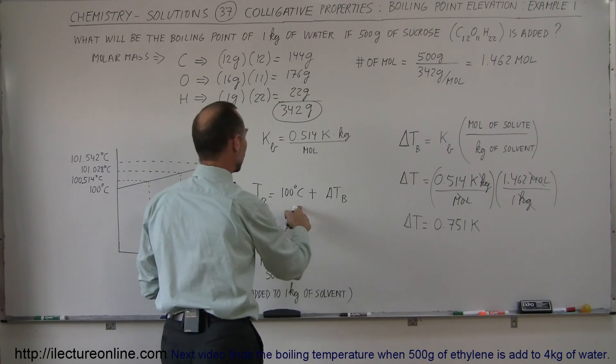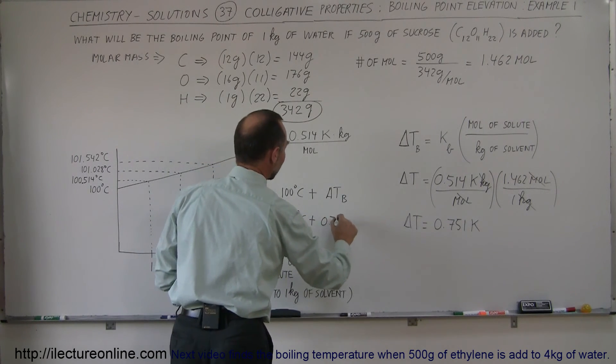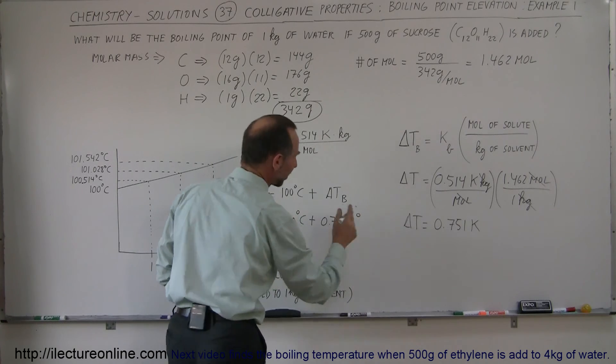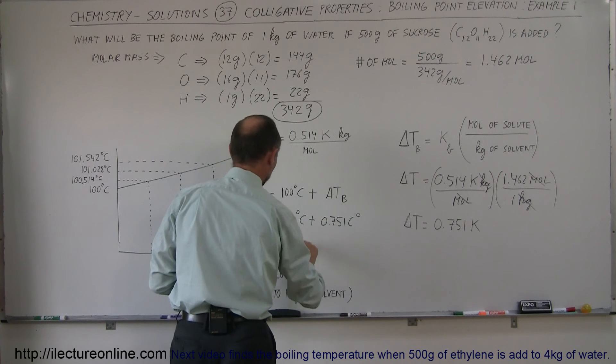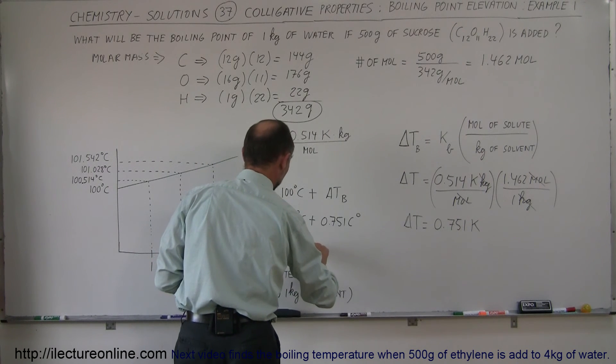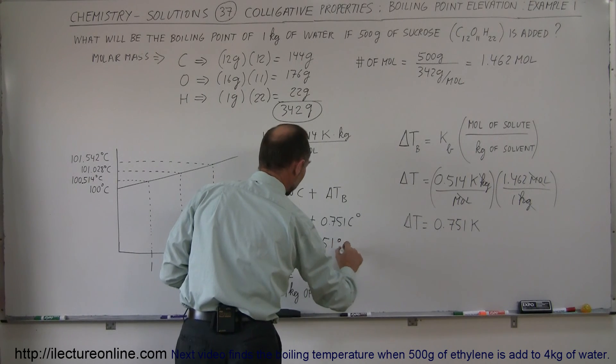We add that to the 100 degrees, so that would be 100 degrees centigrade plus 0.751 centigrade degrees. So you can either write Kelvin or centigrade degrees. Add them together, we have a new boiling point of 100.751 degrees centigrade.